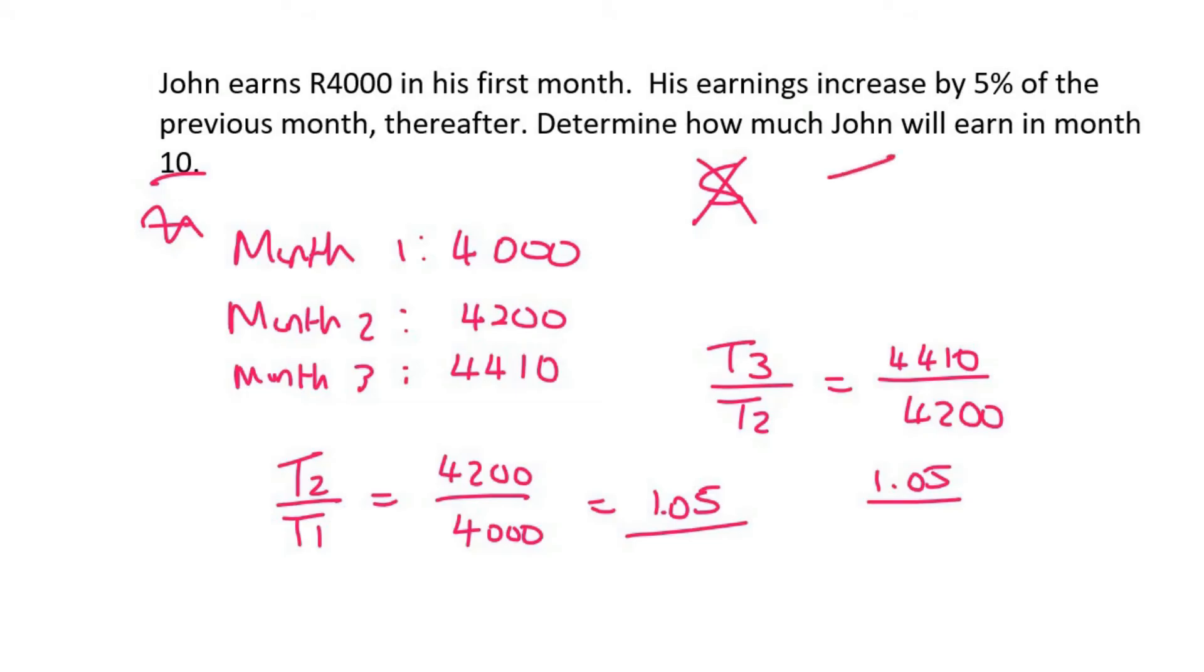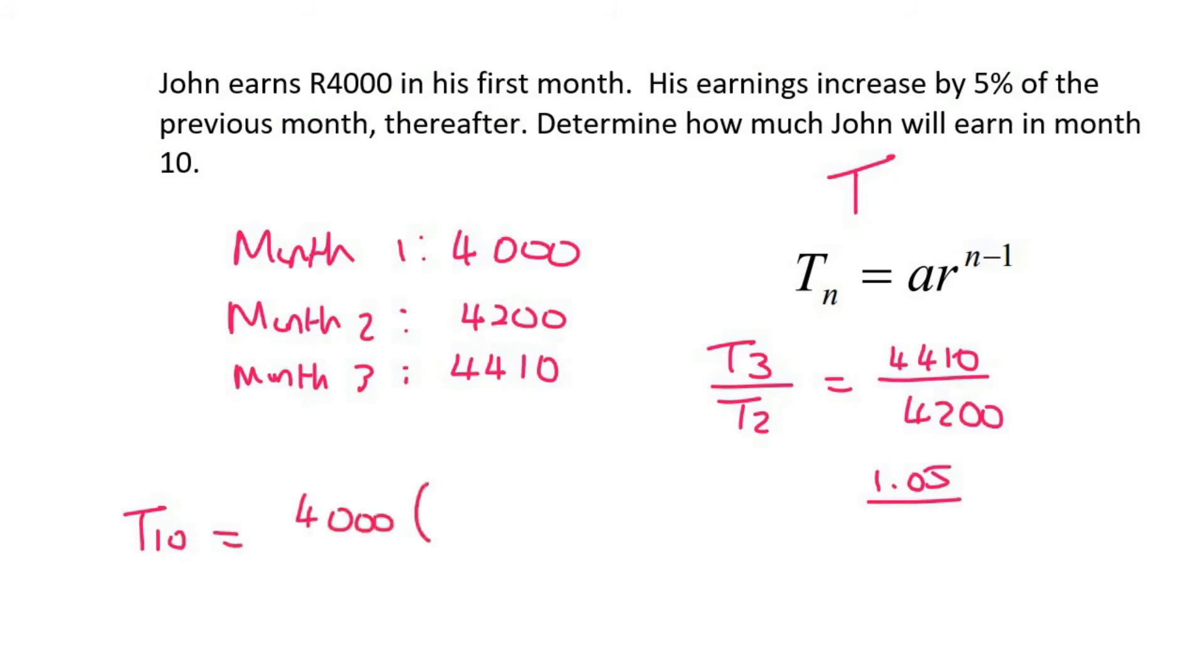We're rather gonna use the term formula of a geometric because we're only looking for a specific term. So we're looking for term ten. Now a is 4,000, the ratio is 1.05, and then n is ten minus one. So you can go type all of that in and that's gonna be 6,205 Rand and 31 cents.